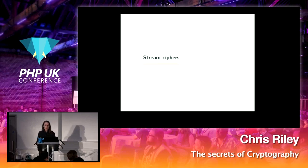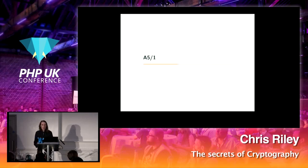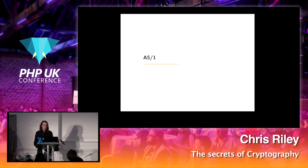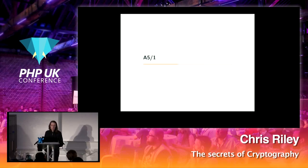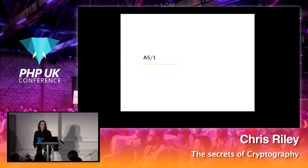There are several stream ciphers in use today. Probably the most well-known is RC4, used in WEP and SSL. I've chosen a slightly different one called A5/1. You've probably never heard of this algorithm, but I can almost guarantee every single one of you is using it — it's used to protect voice and SMS data in mobile phones. This algorithm has actually been broken and is no longer considered secure; it was state-of-the-art a few decades ago. But it's an interesting one to look at as a stream cipher example.